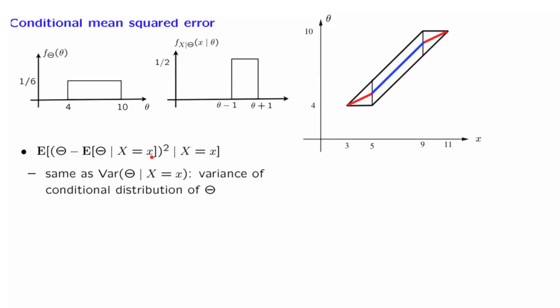As we have discussed, this is the same as the variance of theta in the conditional universe where x has been observed. It's the variance of the conditional distribution of theta.